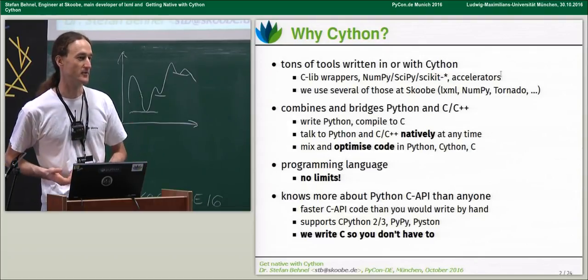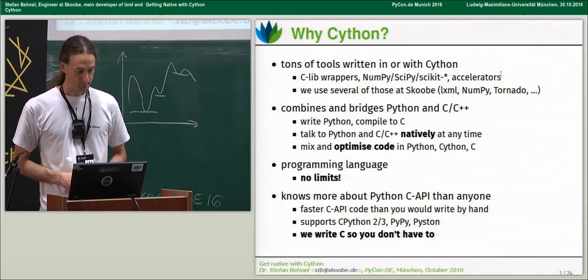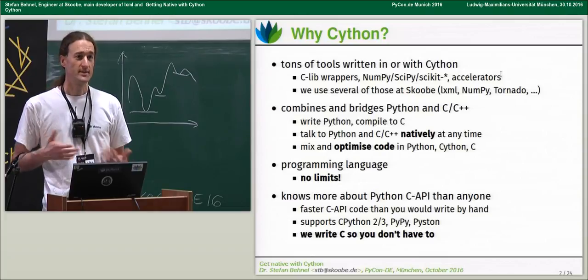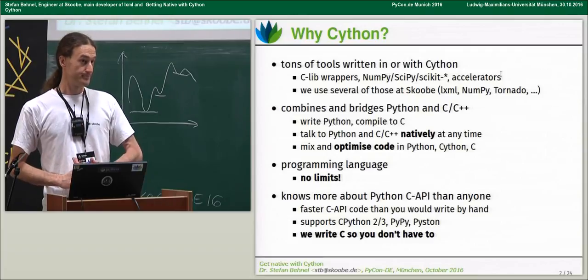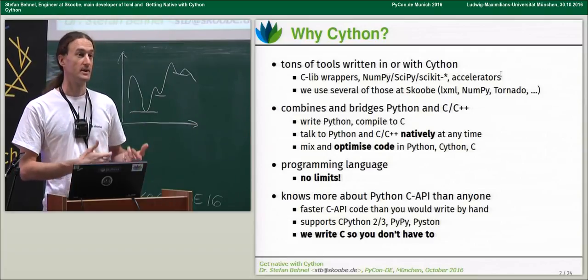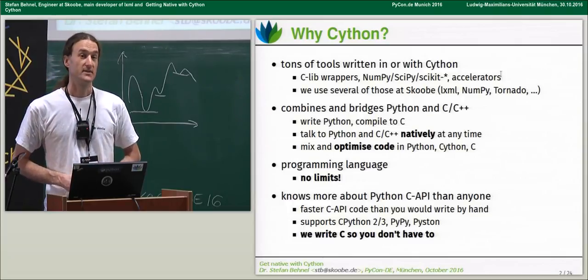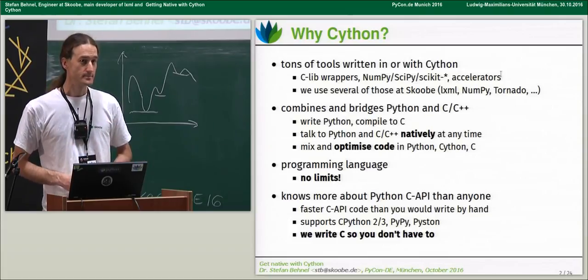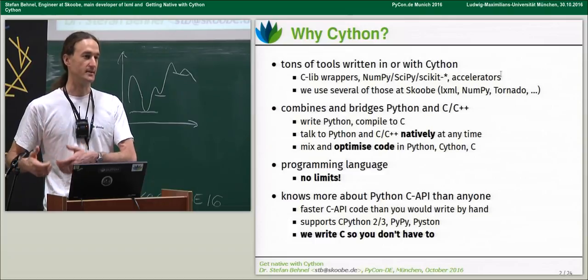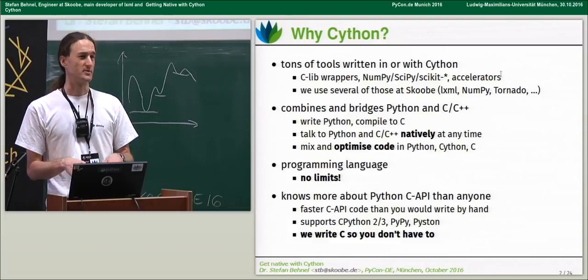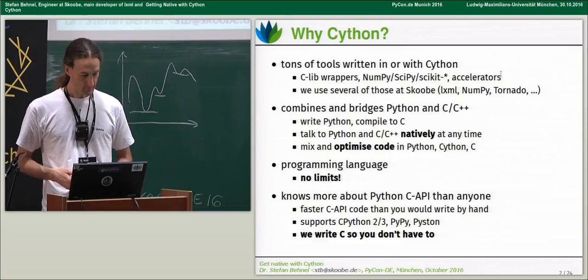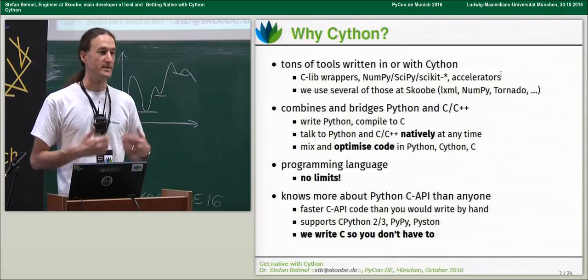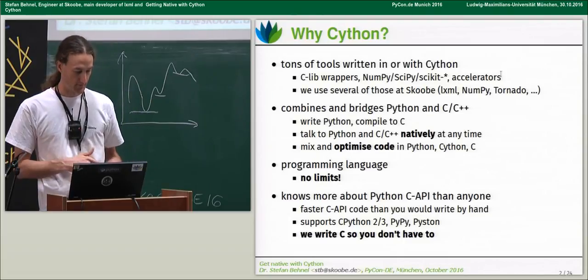People like writing Python code; they don't like writing C code, but sometimes you can't avoid it — that's why they choose Cython. Cython is basically a bridge between Python and C, and even C++. It's a programming language: you can take Python code and Cython will compile it to C, but it also lets you optimize by using C inside Python. You can mix both languages and choose to go down to C at any time.